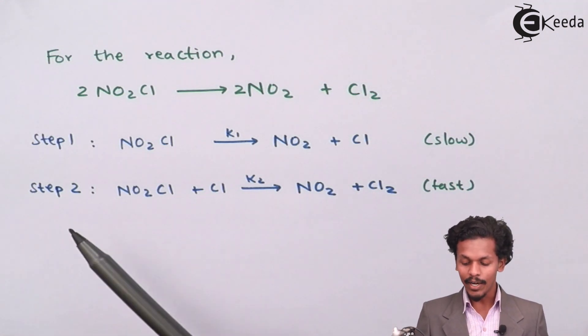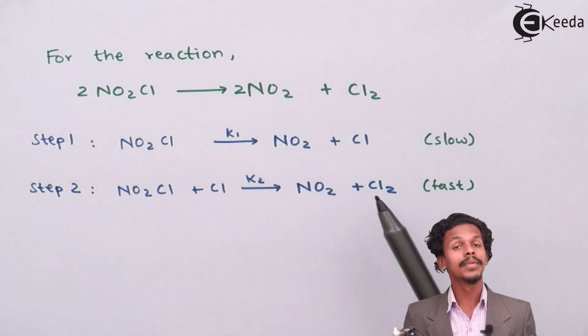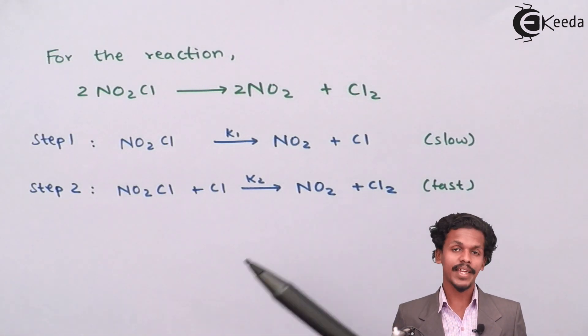While the second step is NO2Cl plus Cl that gives NO2 plus Cl2 with a rate constant of K2.